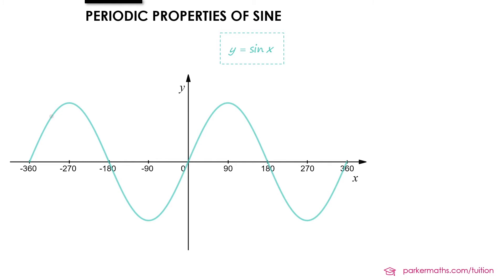For example with the sine graph if we take a point on the graph and then we move 360 degrees in the positive x direction we get to another point with the same y value where the graph starts to repeat itself. And that will happen every 360 degrees in both the positive and negative x direction.